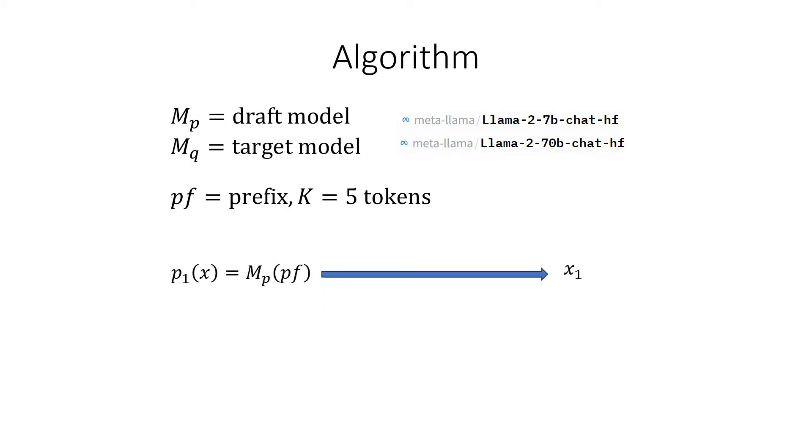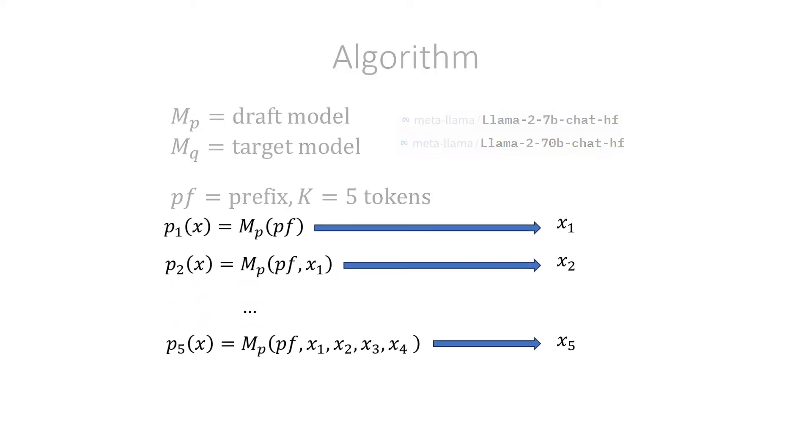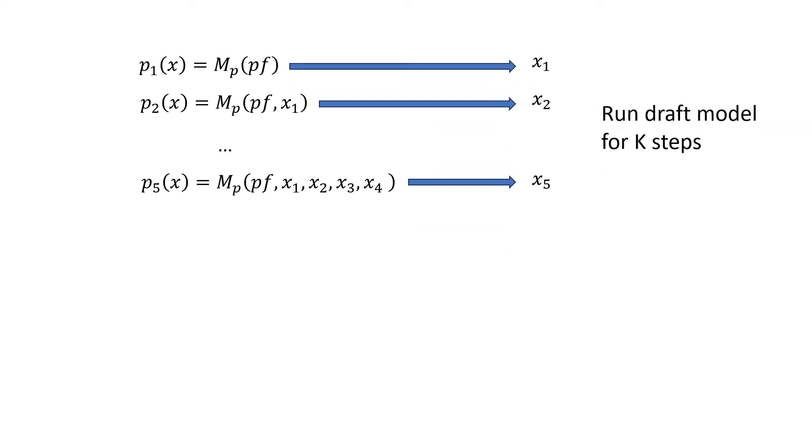The first thing we want to do is run the draft model autoregressively five times to generate a sequence of five tokens. In each iteration, the input to the model is the prefix and all of the tokens that we generated so far. The model produces a probability distribution over the vocabulary, and then we sample this probability distribution to get an actual token. So in the first part of the algorithm, we have run the draft model for K steps to get K tokens.